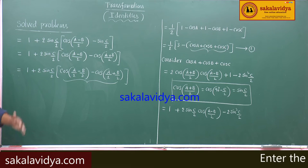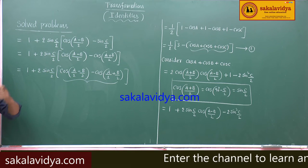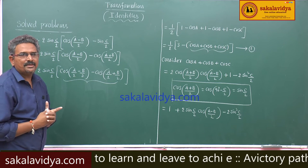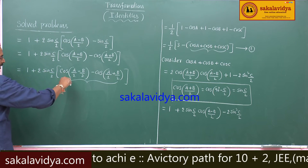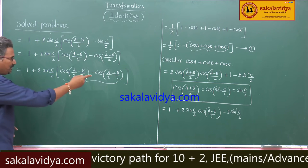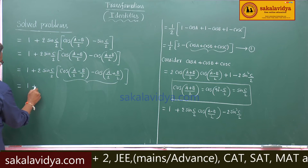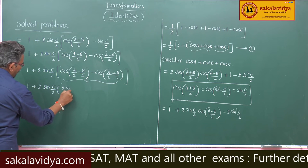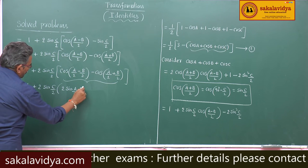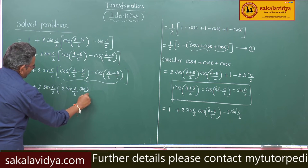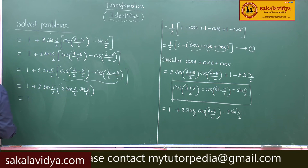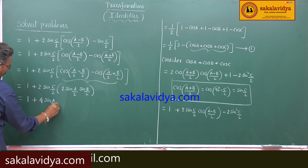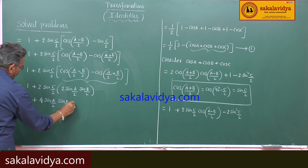This is nothing but cos(A-B) minus cos(A+B) form. In compound angles we have discussed that cos(A-B) minus cos(A+B) equals 2sinA sinB. So here, with A replaced by A/2 and B by B/2, we get 1 plus 2sin(C/2) into 2sin(A/2)sin(B/2), which equals 1 plus 4sin(A/2)sin(B/2)sin(C/2).